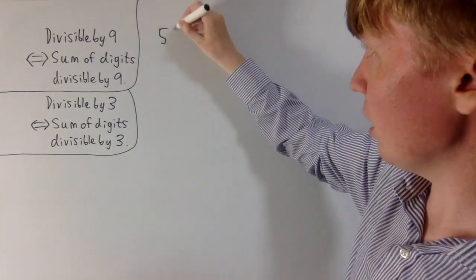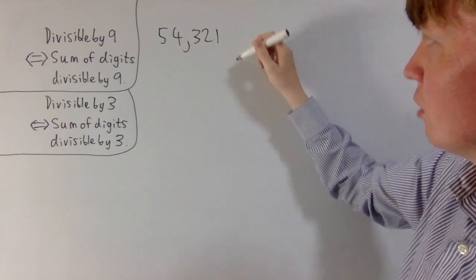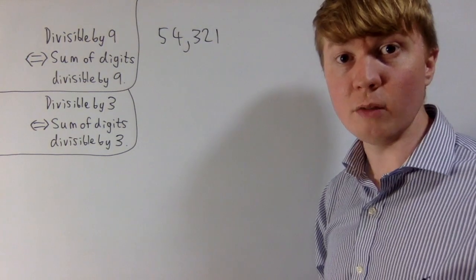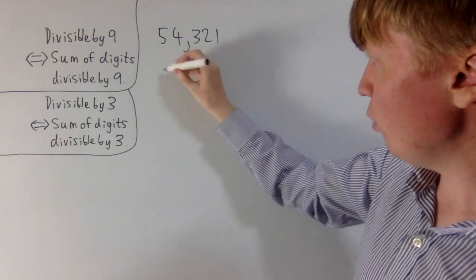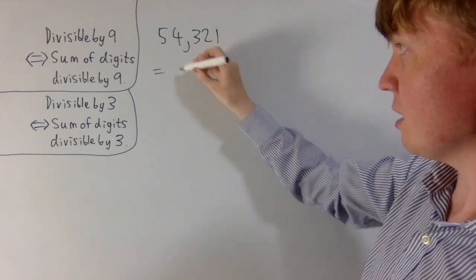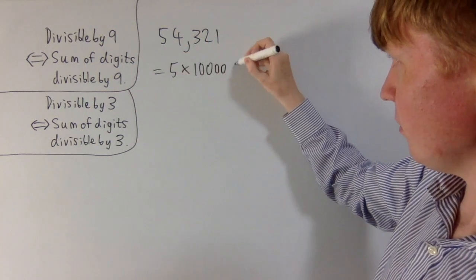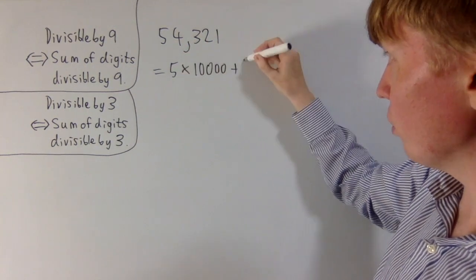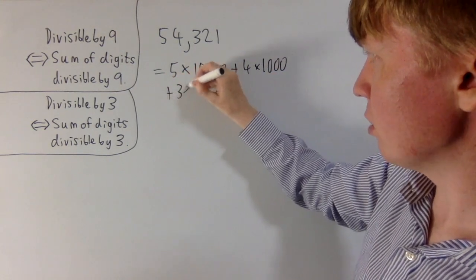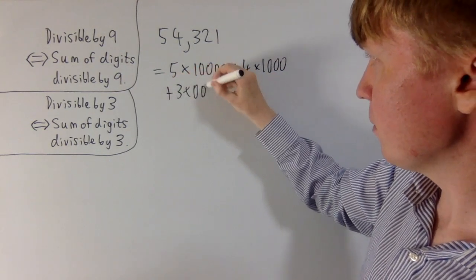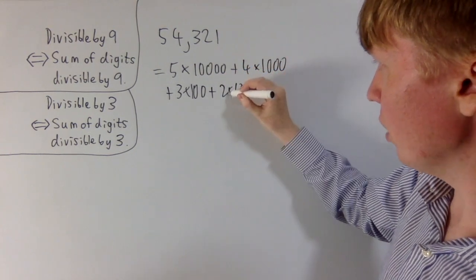Let's say we want to check whether the number 54,321 is divisible by 3 or 9. Let's write this using our knowledge of base 10. This 5 is really 5 times 10,000. Then the 4 is 4 lots of 1,000. And we've got three hundreds, two tens, and finally the 1 is just a 1.